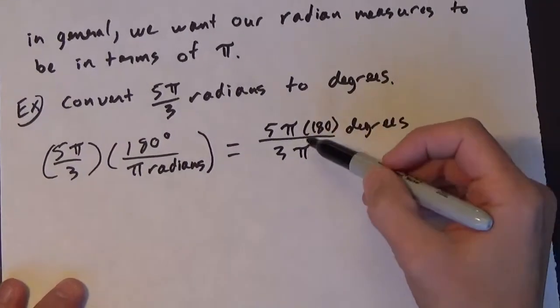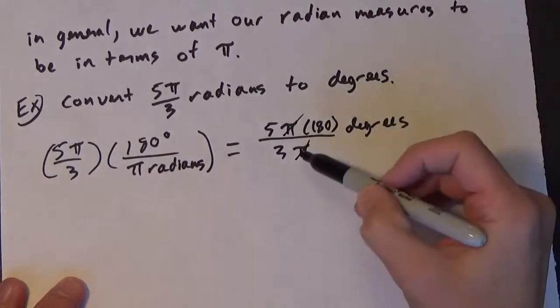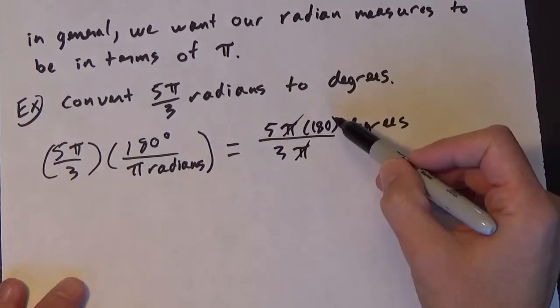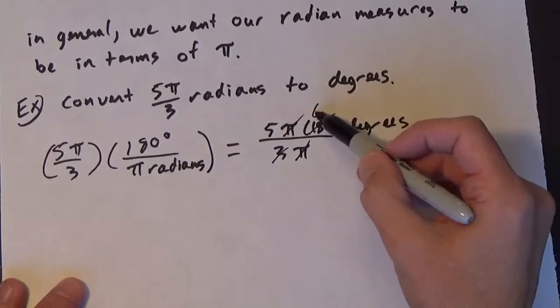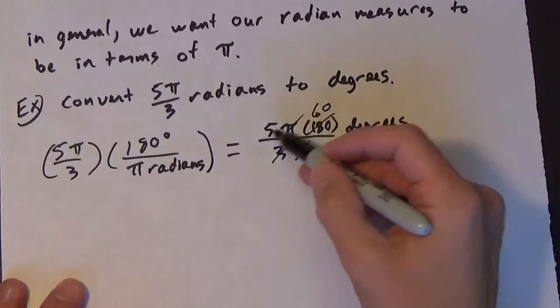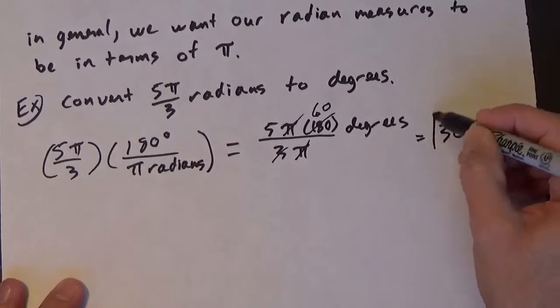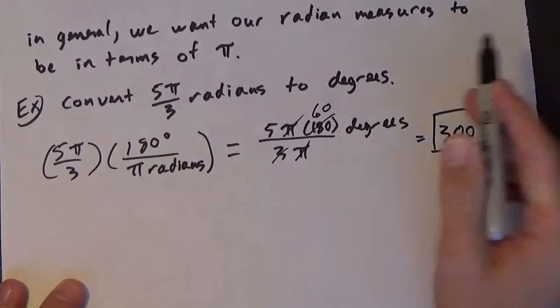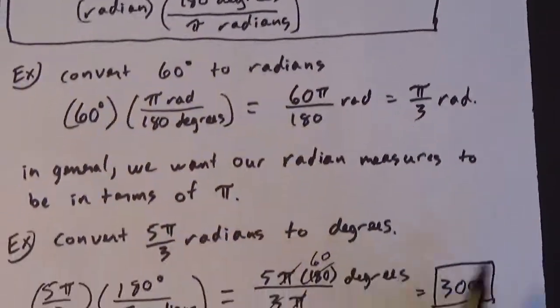And then the nice thing that happens here is the pi's cancel out. And then 3 and 180, 3 goes into 180 sixty times. And so 60 times 5 is 300 degrees. And that would be our answer. So 5 pi over 3 radians is 300 degrees. And pi over 3 radians is 60 degrees.